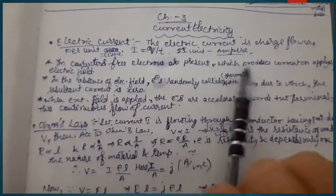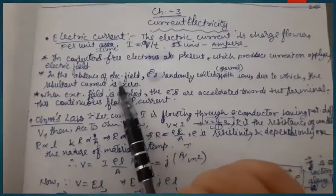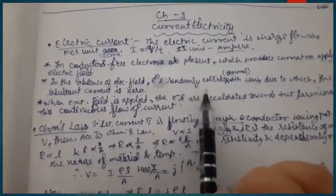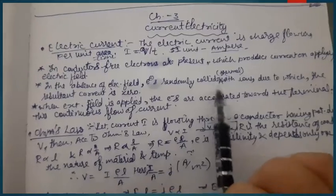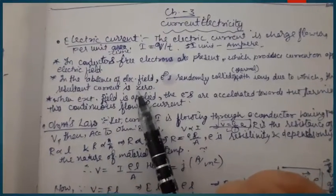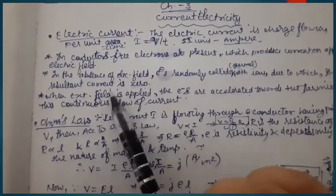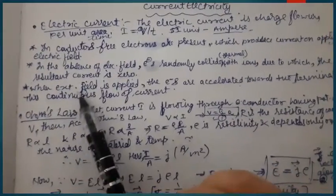In the absence of an external electric field, free electrons are still present but randomly collide with ions. These collisions occur in all possible directions due to which the resultant current is zero.